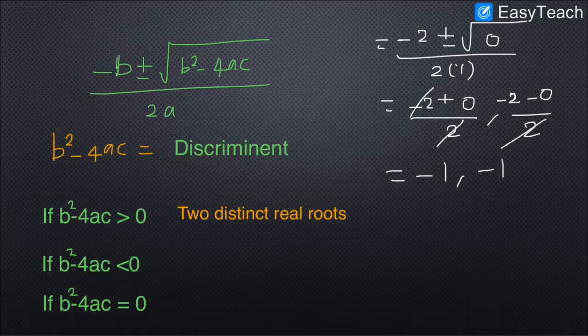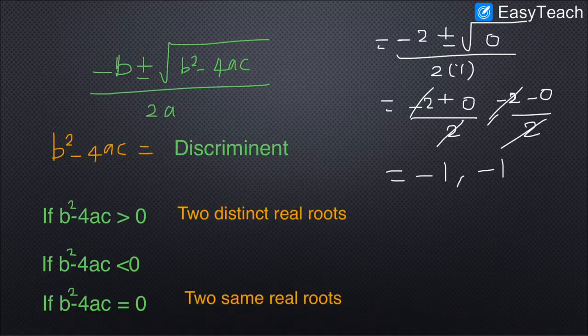The solutions are -1 and -1 — both the same value. These are real numbers, so when the discriminant equals exactly 0, we get two equal real roots.